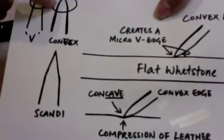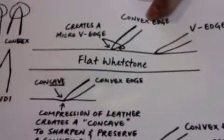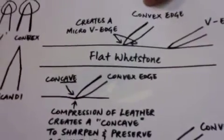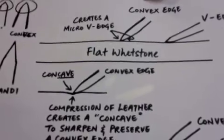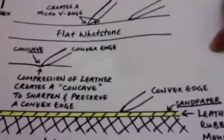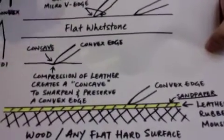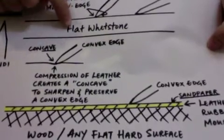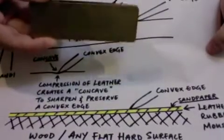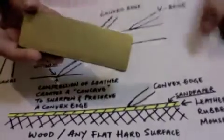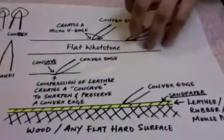However, with a convex edge, you have to sharpen it differently, which brings me to the other question that you have, whether using sandpaper is the best way to sharpen a convex edge or the F1. This question has been asked me several times by different people, so today, I finally got down to doing this video. Look at this, this is a flat whetstone.